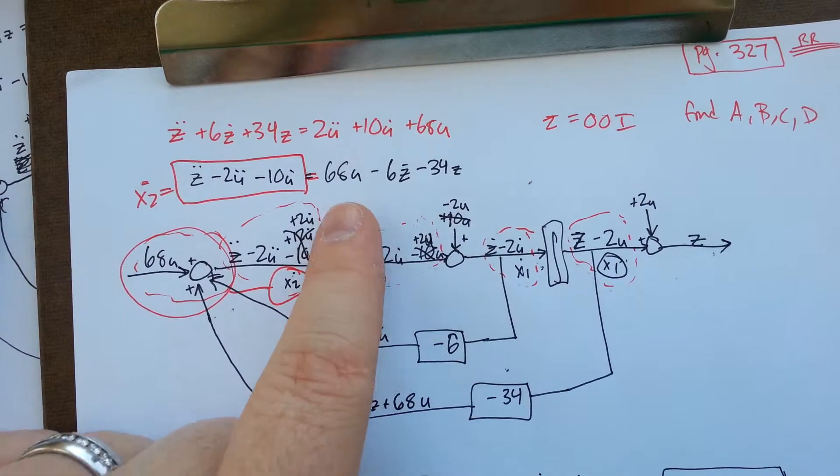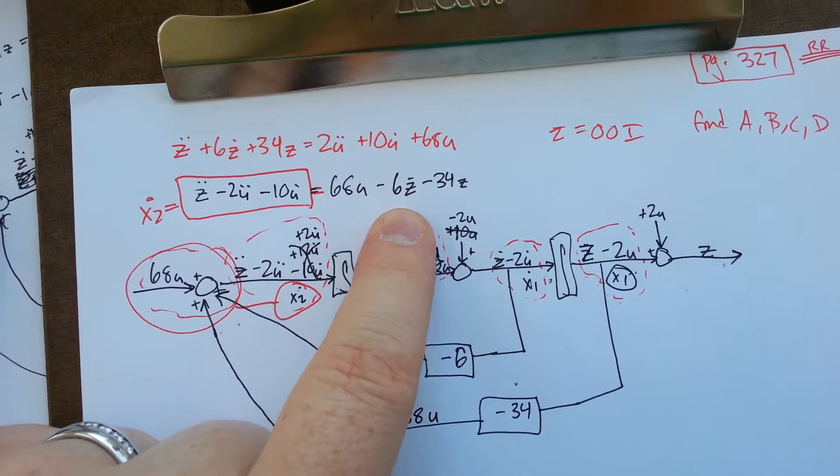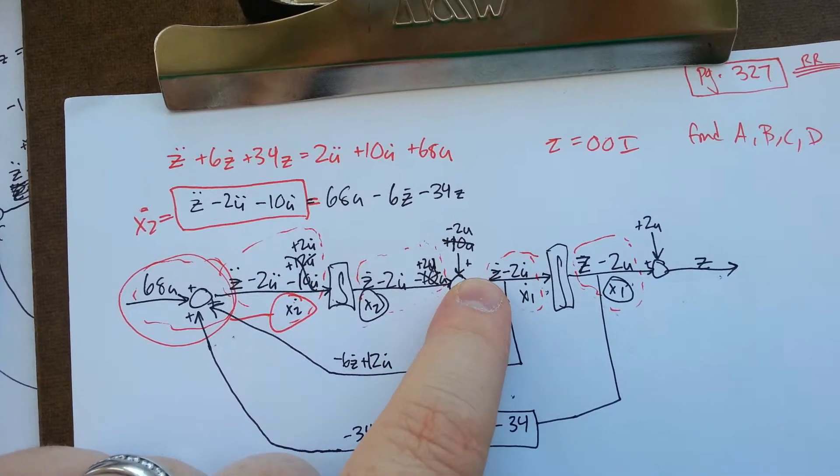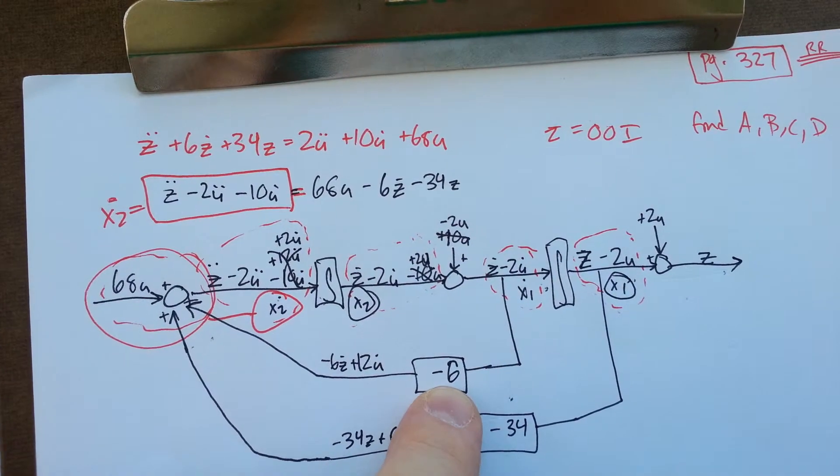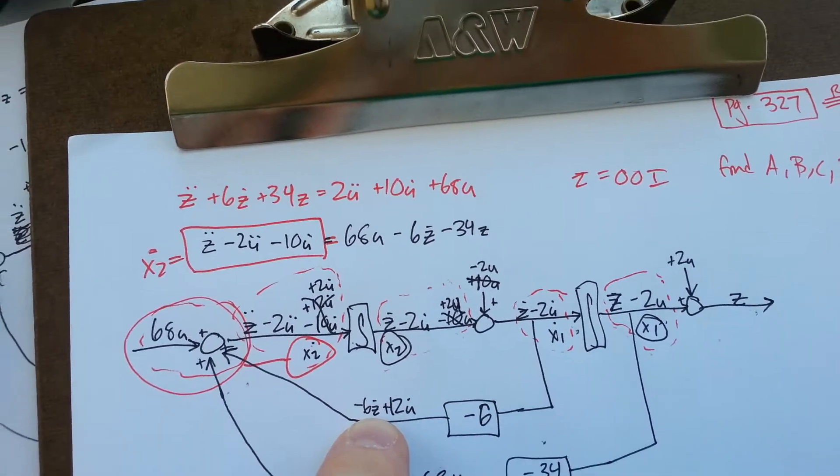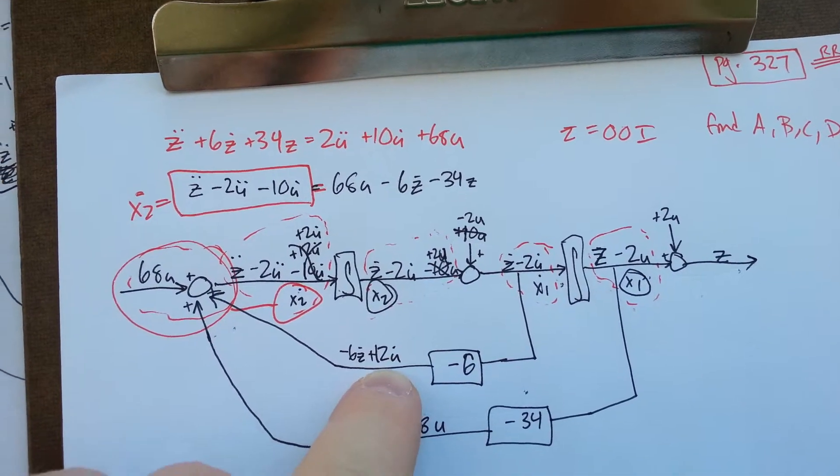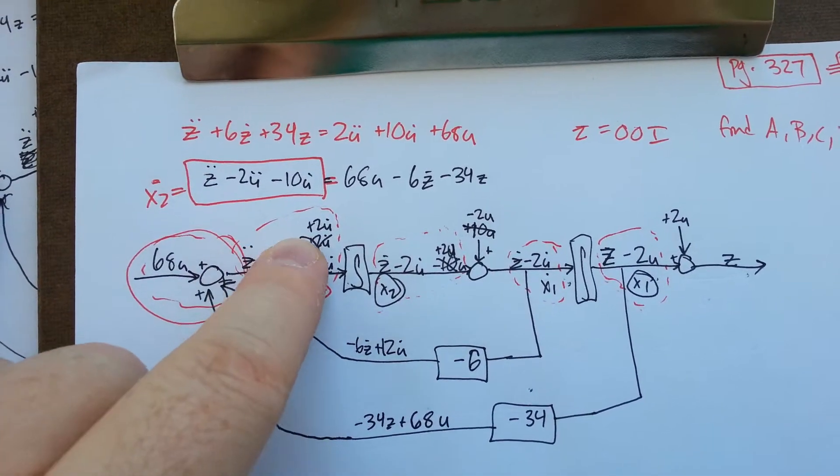So I need a minus 6z dot. Well, over here my x1 dot is a z dot minus 2u dot. So if I pull that out, multiply it by negative 6, now I've got 6z dot, but I also pull the plus 12u dot in there so I have to carry that up.